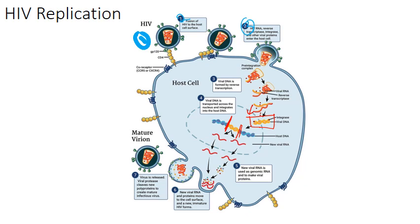Once integrated, the HIV cDNA is in that cell forever — as long as that cell replicates, it's going to replicate HIV as well. The cDNA can also remain in the nucleus and cytoplasm in a non-integrated circular form, just hanging out until it gets a chance to be integrated and the cell is activated to replicate.